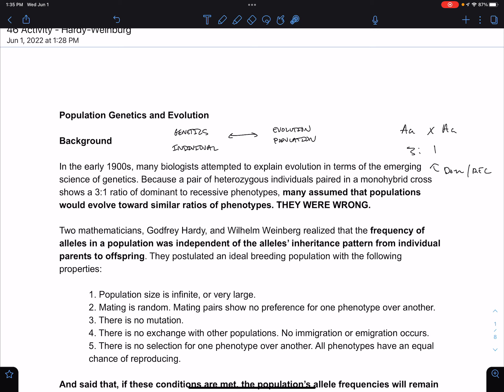Geneticists of the early 1900s assumed that populations would evolve towards similar ratios of phenotypes, and they were wrong. I want to disconnect this idea of a 3 to 1 ratio at the level of the individual from a 3 to 1 ratio at the level of the population, because this might not reflect the frequency of the big and little A alleles in the population.